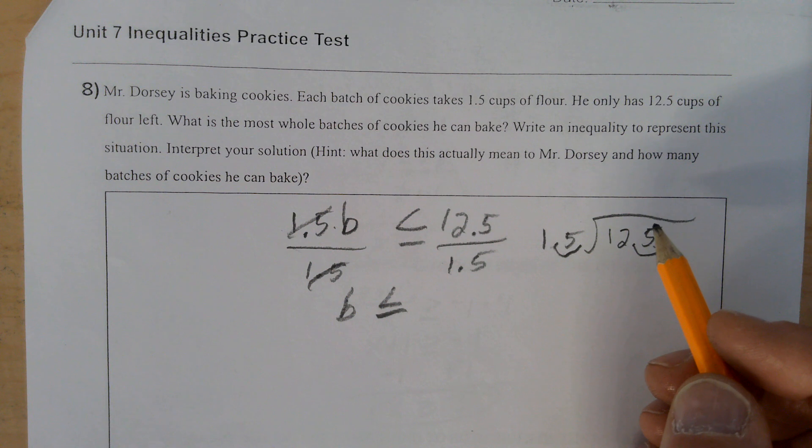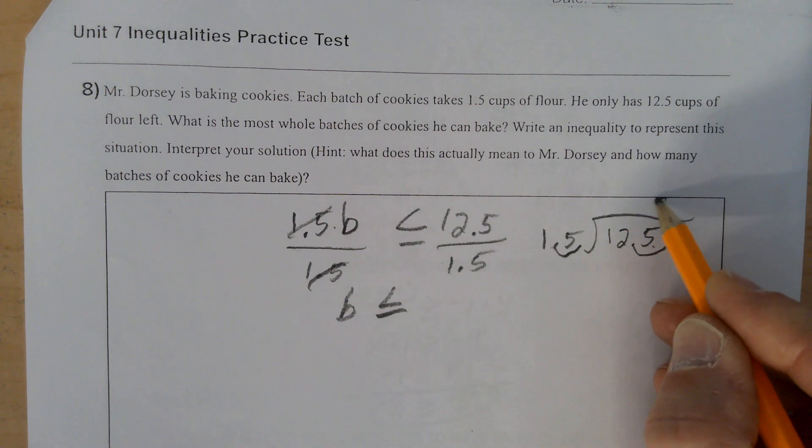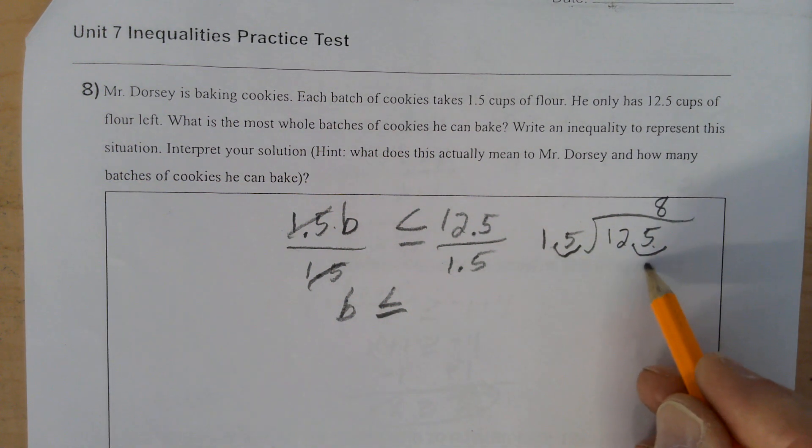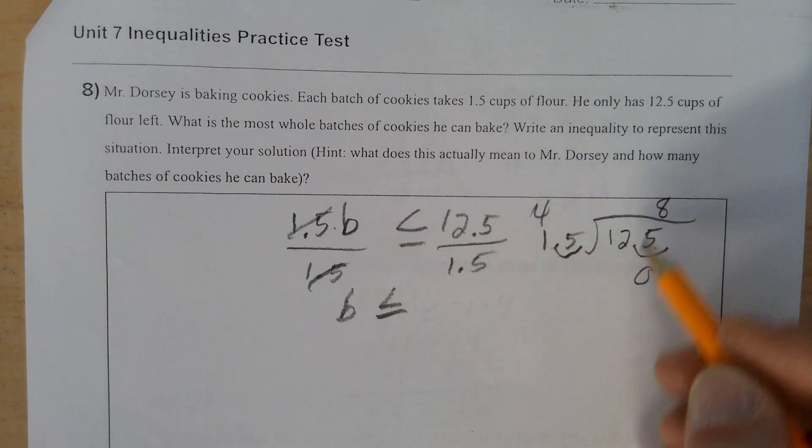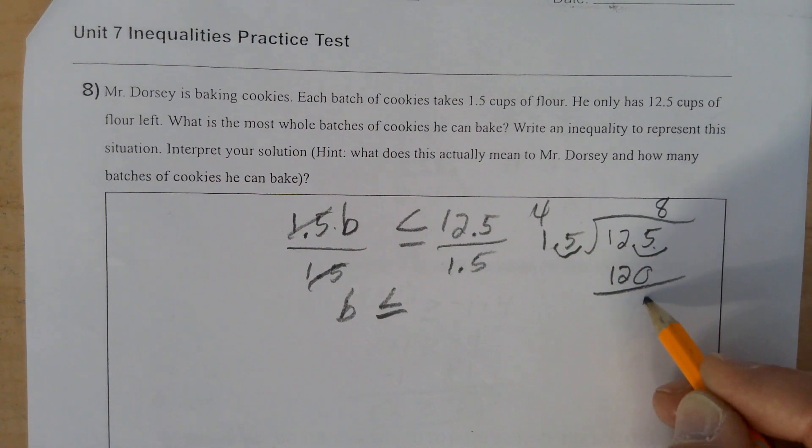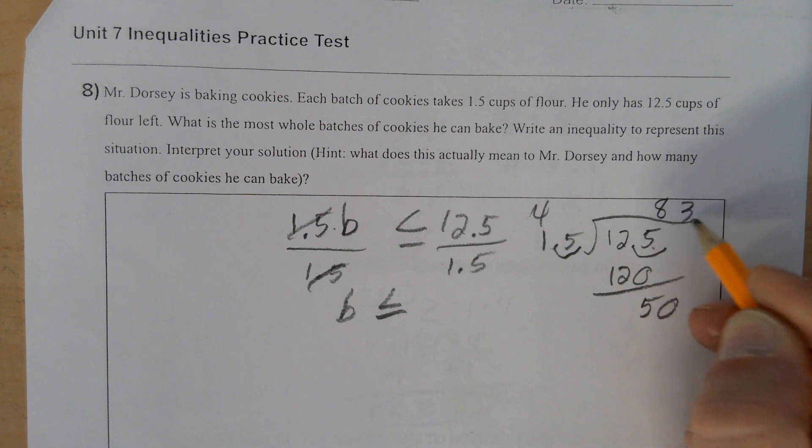15 does not go into 12, but it goes into 125. I'm going to guess 8 times. 5 times 8 is 40, carry the 4. 1 times 8 is 8, plus 4 is 12. 120, I was pretty close. 5 minus 0 is 5. 15 goes into 50 three times. 3 times 15 is 45.